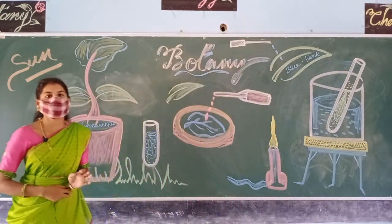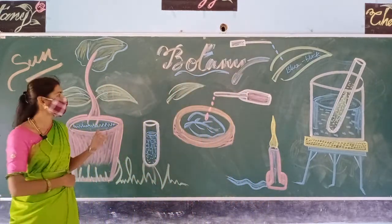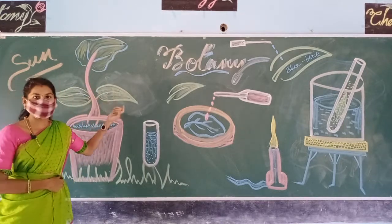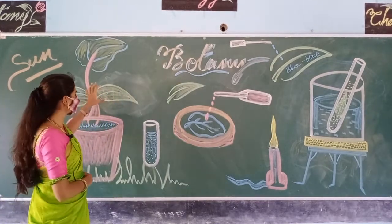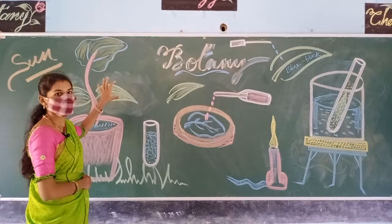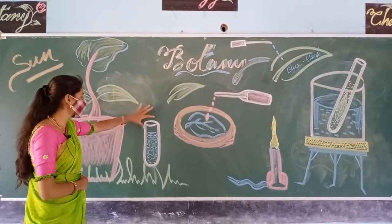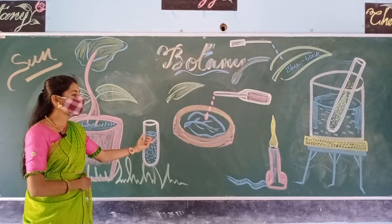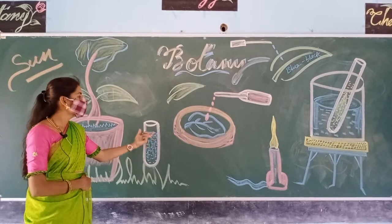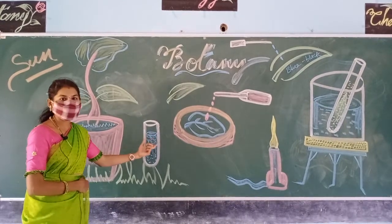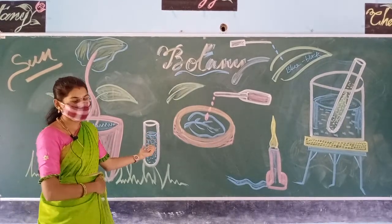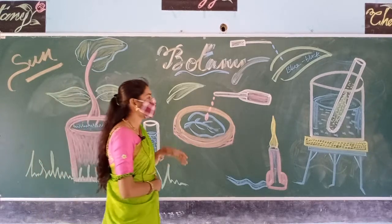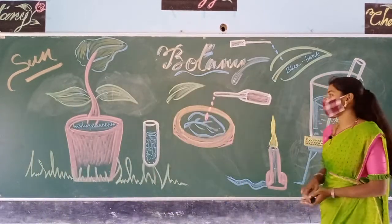First, we need to take a fresh, elongated, mature leaf from a plant. We must take that mature leaf into a boiling test tube, add spirit or alcohol to it, and then keep it aside.